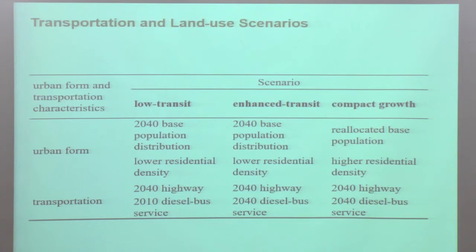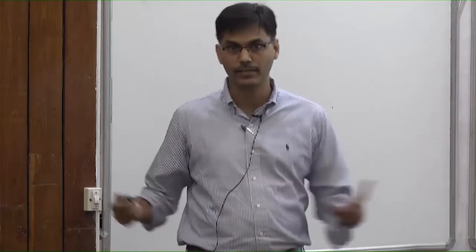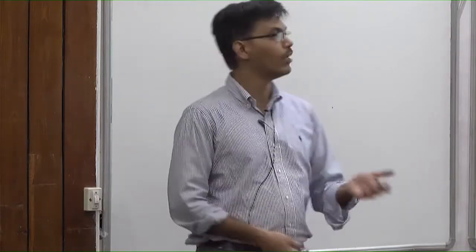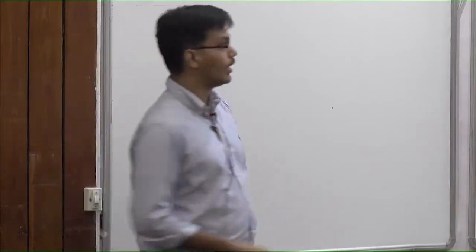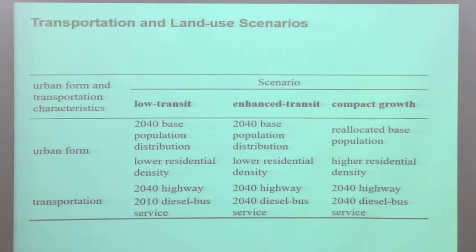Interestingly, the enhanced transit scenario doesn't lead to much change in transit ridership, because just increasing transit service doesn't seem to help — we need to bring people closer to transit in terms of workplaces and all of that. Emissions actually increased because of buses running empty with less ridership, and concentrations also increased in the enhanced transit scenario. When we combine compact growth with enhanced transit, that seems to help in reducing emissions, though not substantially, again because of diesel buses. If CNG or other alternative vehicle types were used, maybe there is a better chance.